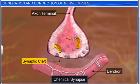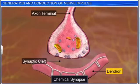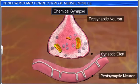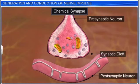The synaptic cleft is a fluid-filled gap between the axon terminal and the dendron of another neuron. So there is no protoplasmic continuity between neurons. When an impulse or action potential arrives at the axon terminal, it stimulates the movement of the synaptic vesicles towards the pre-synaptic membrane. Synaptic vesicles fuse with the plasma membrane and release their neurotransmitters into the synaptic cleft.